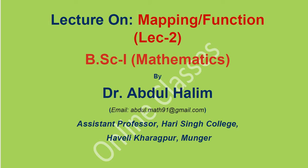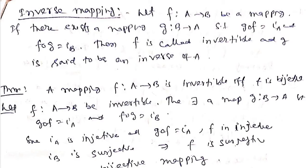Now we will first define inverse mapping and when it is defined. Let f map A to B be a mapping. If there exists a mapping g from B to A such that g∘f equals the identity of A, and f∘g equals the identity of B, then f is called invertible and g is called an inverse of f, denoted f⁻¹.